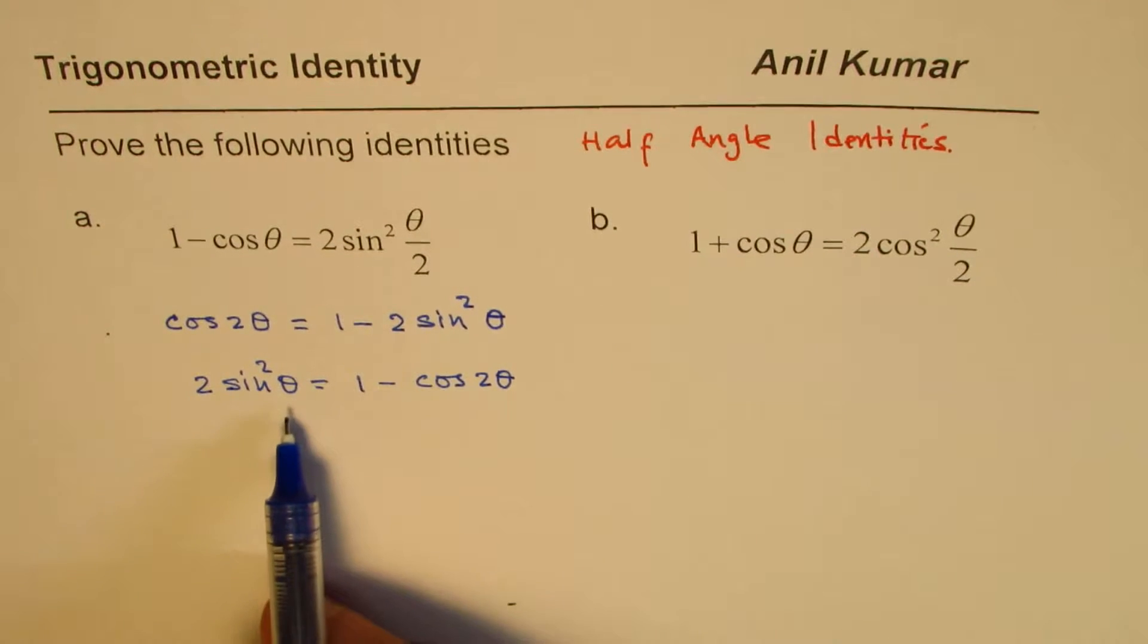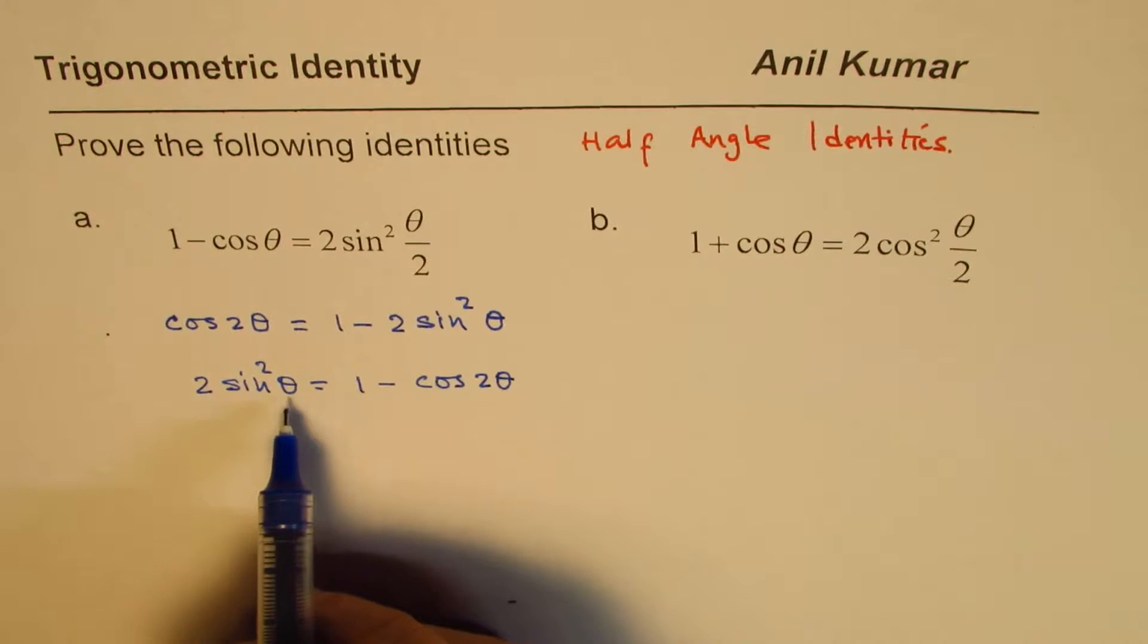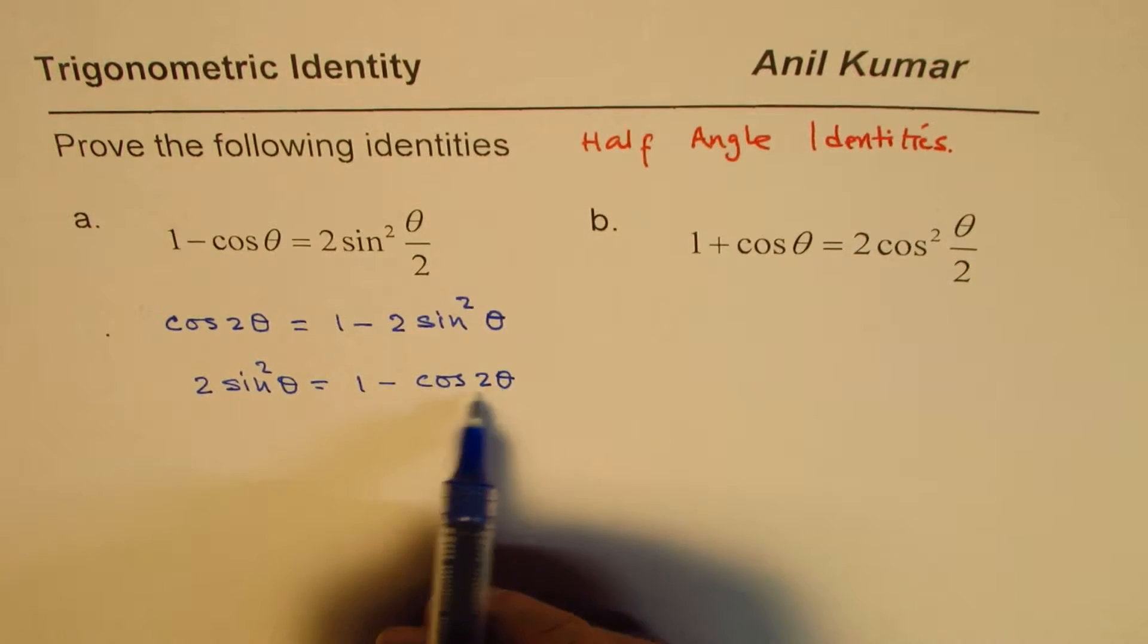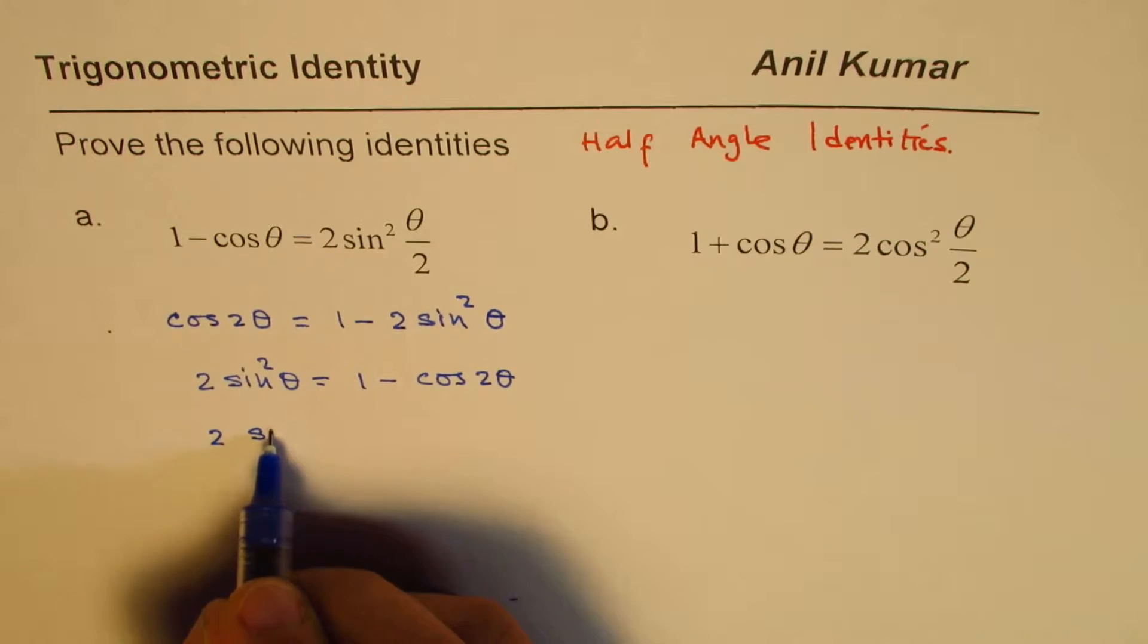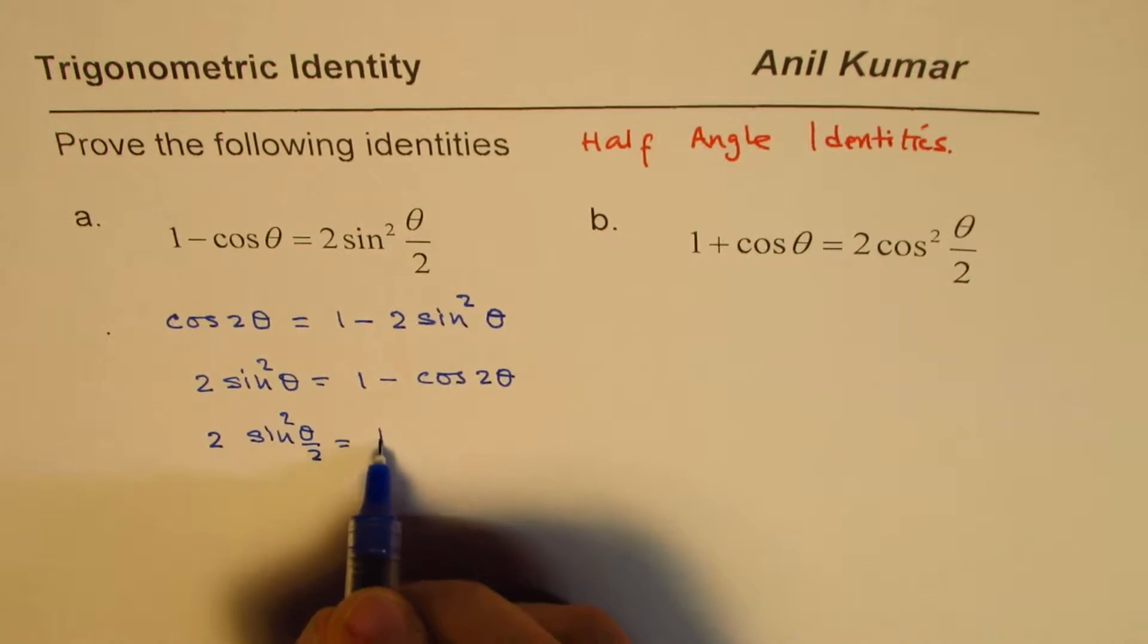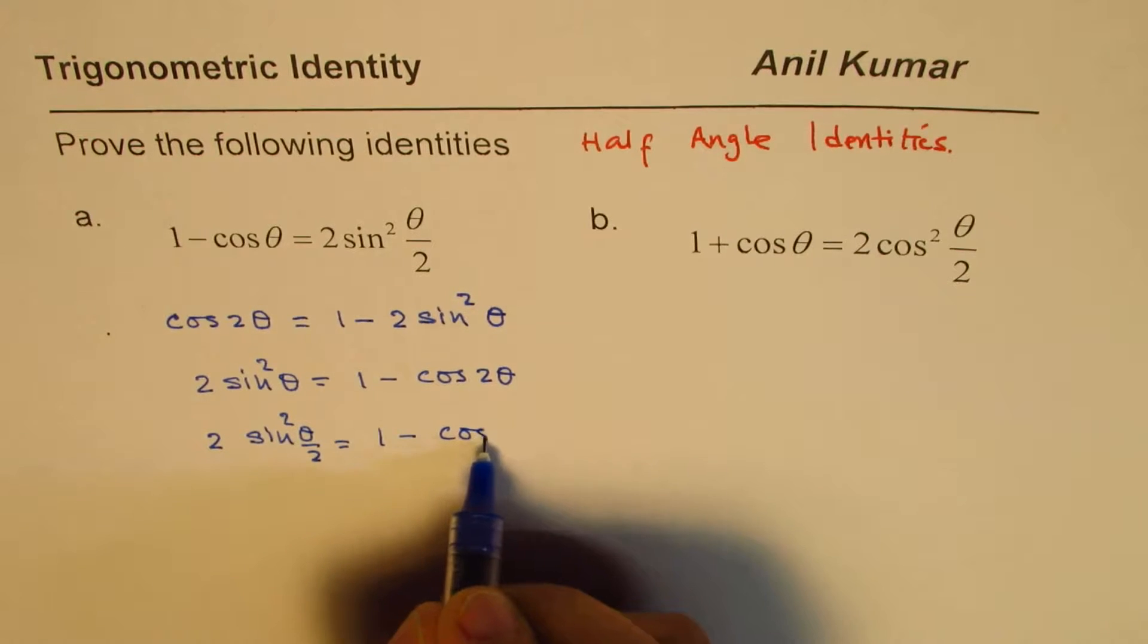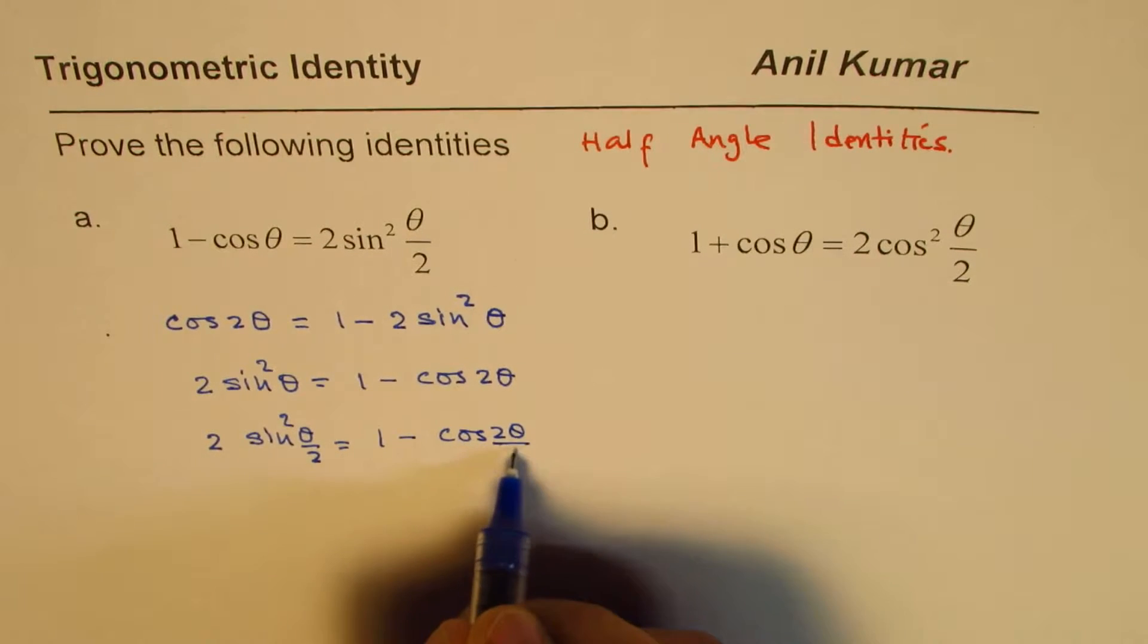Now, theta is any angle. So if I replace this by theta by 2, what happens? This becomes theta. So from here, we can say 2 sine square theta by 2 should be equals to 1 minus cos 2 theta by 2.